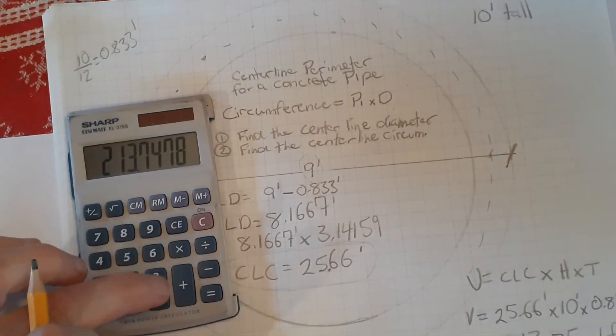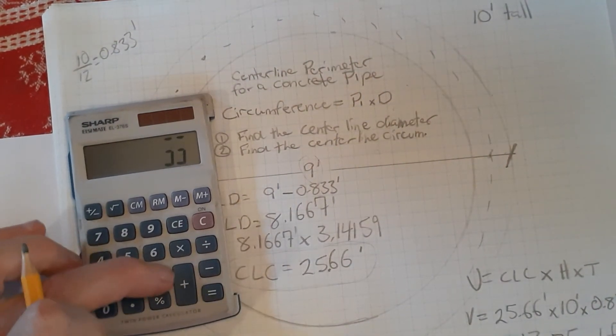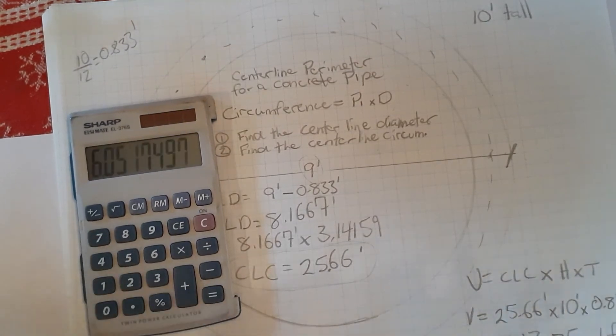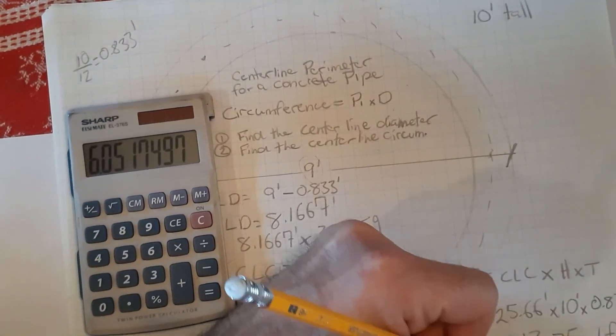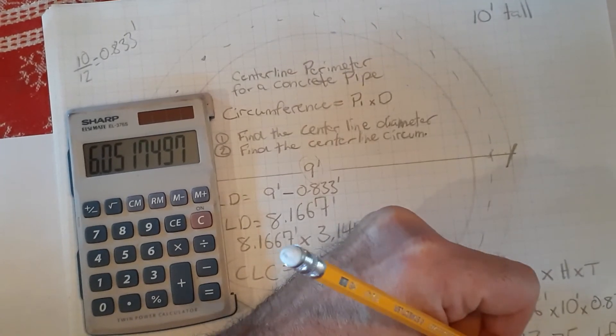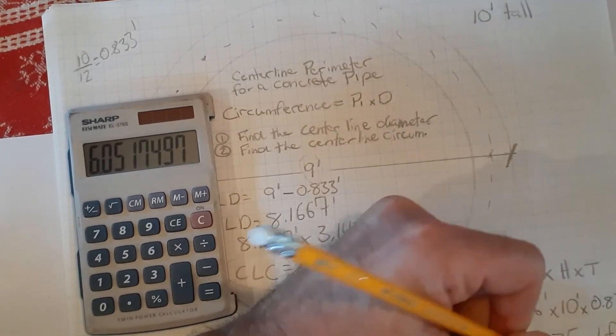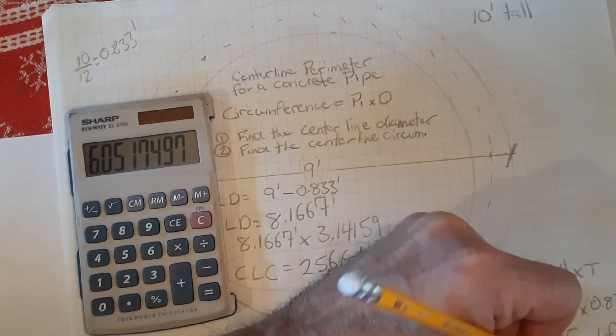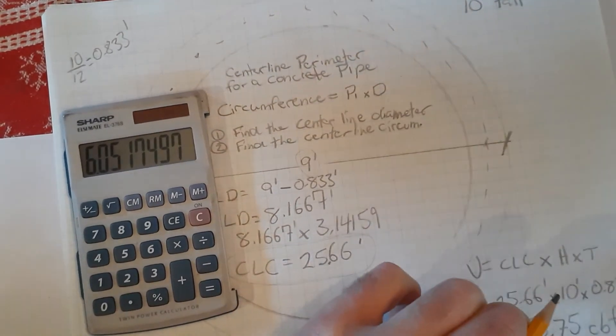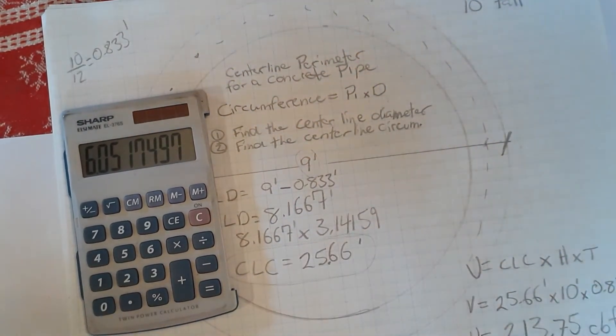Divide that number by 35.32 to find our cubic meters, and we end up with the volume of 6.1 cubic meters of concrete required.